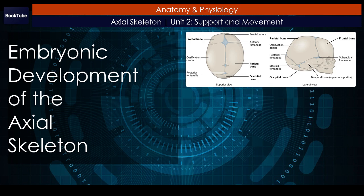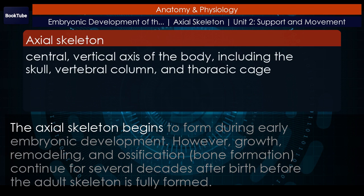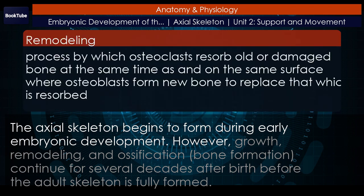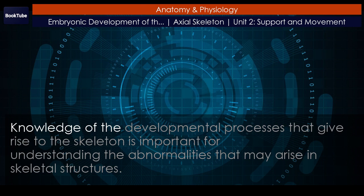Embryonic development of the axial skeleton. The axial skeleton begins to form during early embryonic development. However, growth, remodeling, and ossification — bone formation — continue for several decades after birth before the adult skeleton is fully formed. Knowledge of the developmental processes that give rise to the skeleton is important for understanding the abnormalities that may arise in skeletal structures.